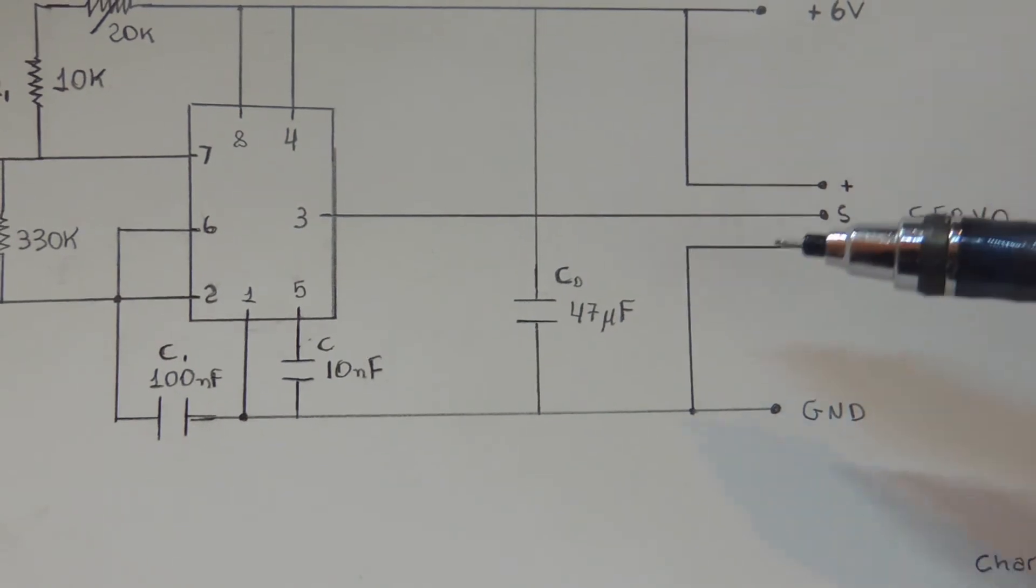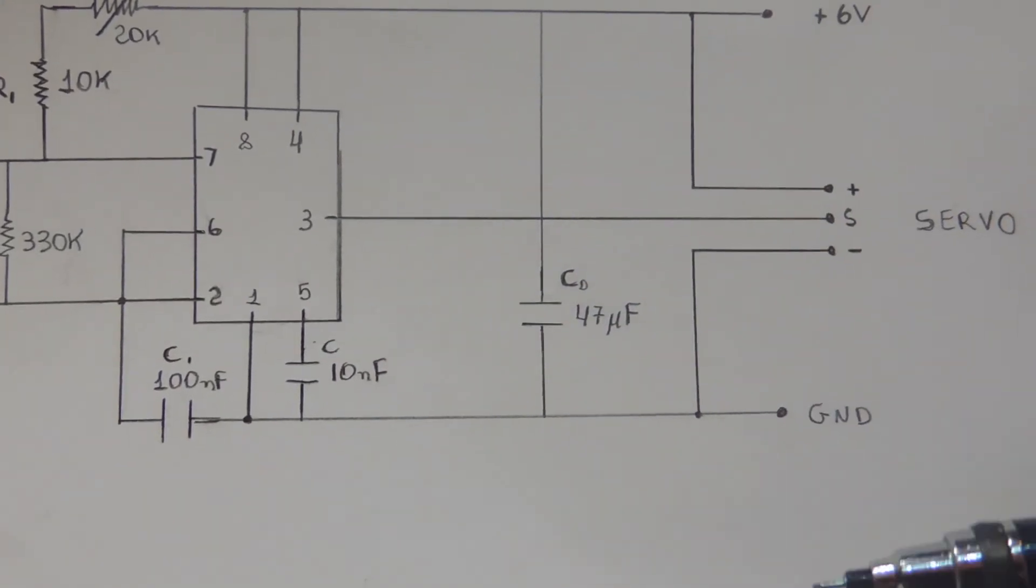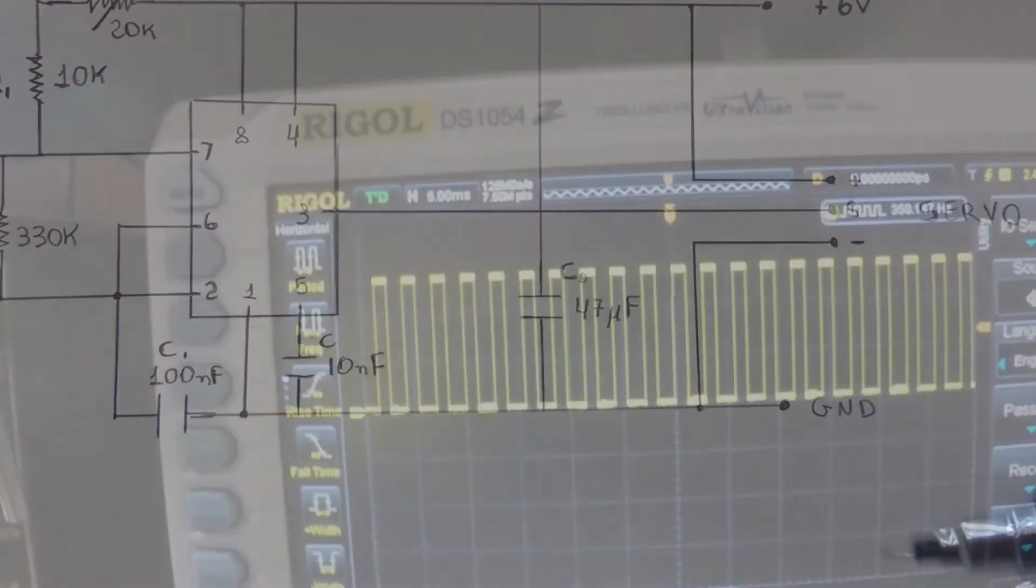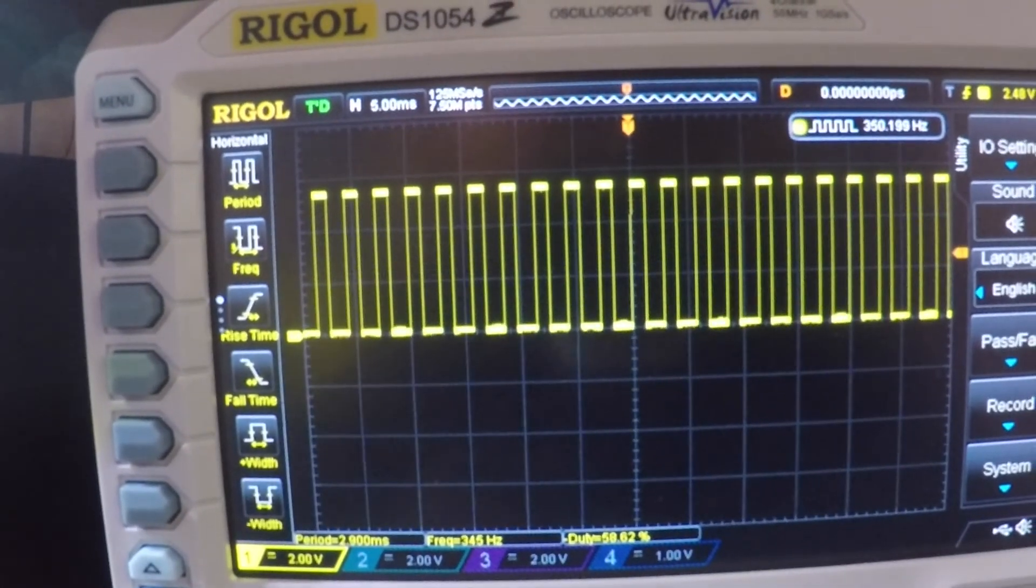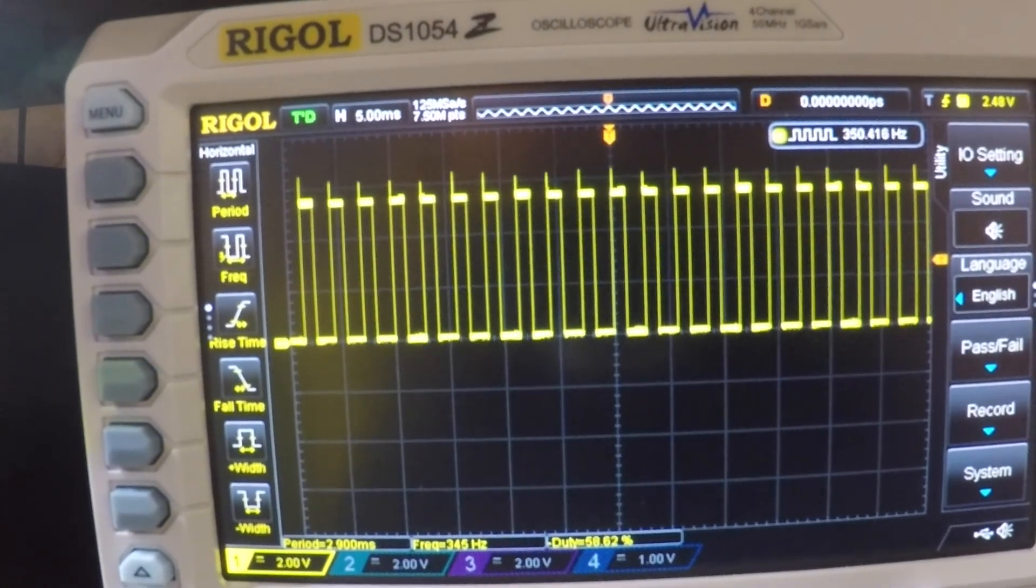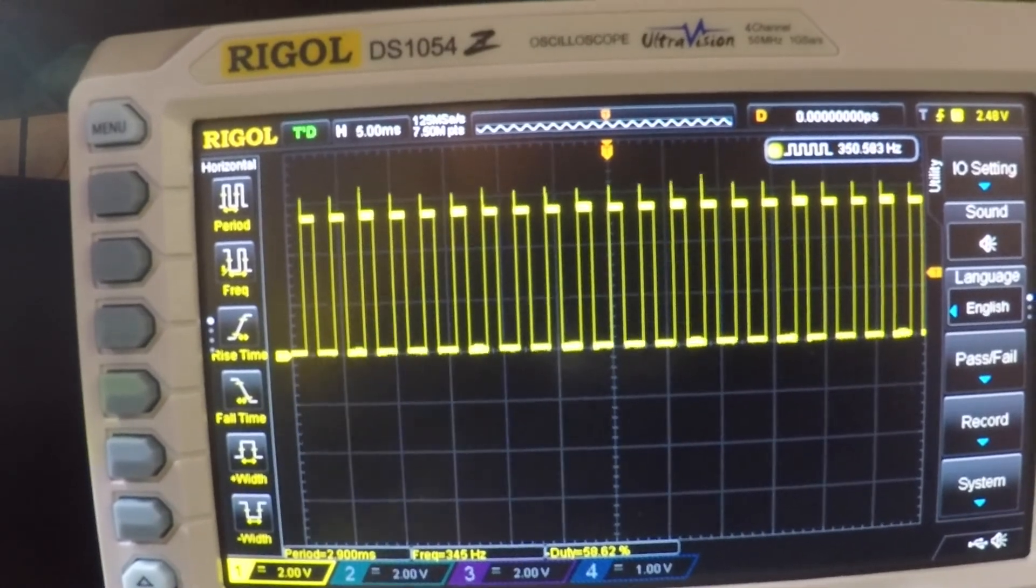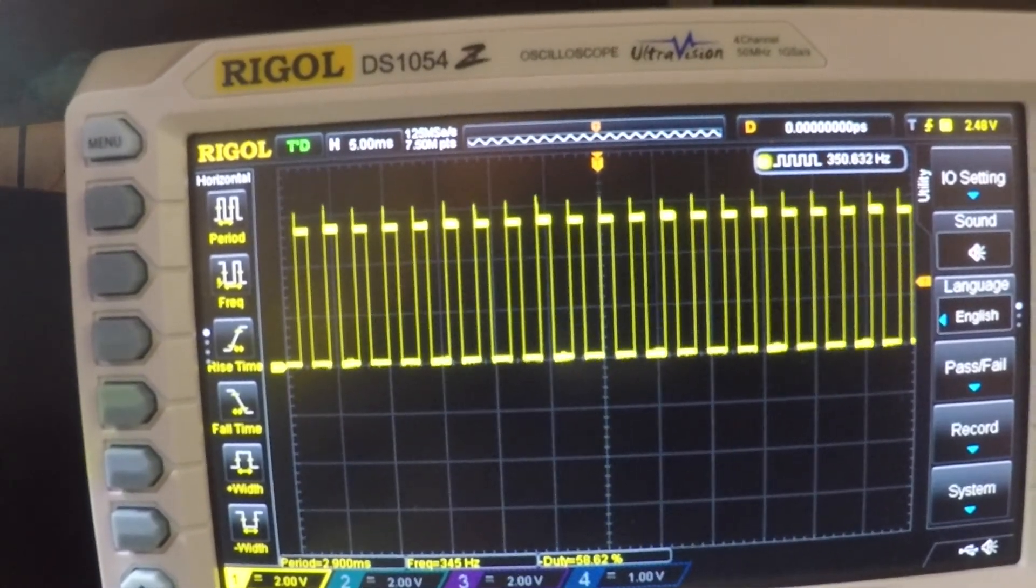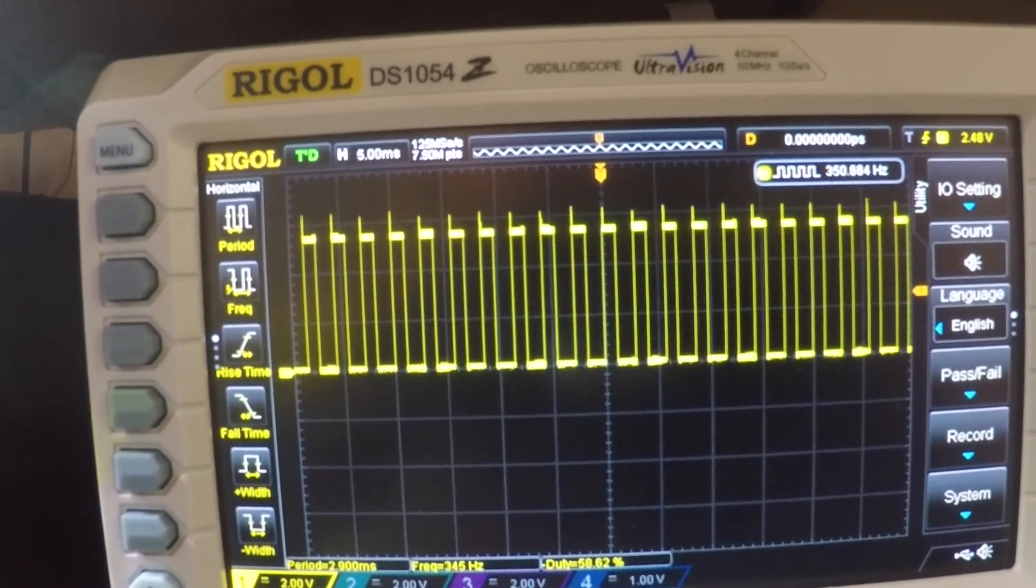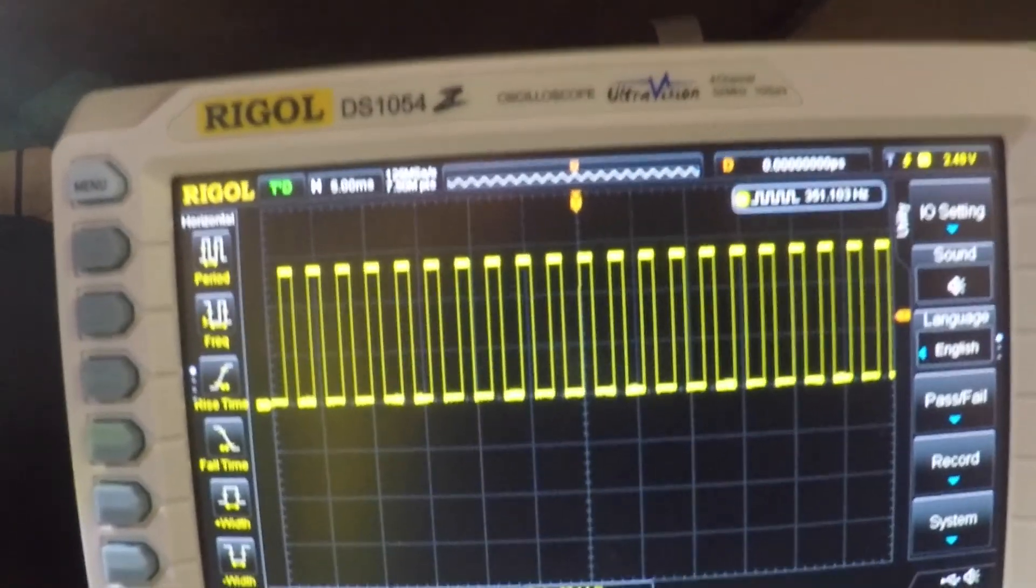One last thing you guys might ask is why you need a decoupling capacitor between the VCC and ground. Let me show you on the scope what happens when we take off our decoupling capacitor. We get noise in our wave, noise caused by the other circuit elements. So the decoupling capacitor shorts the high frequency noise, giving us a better wave.